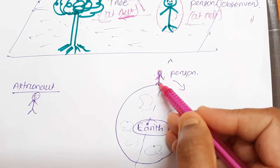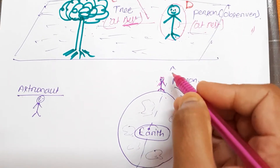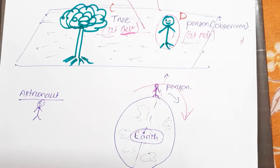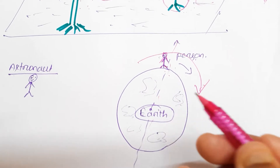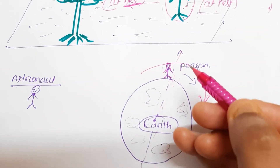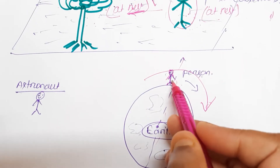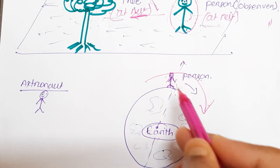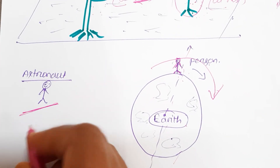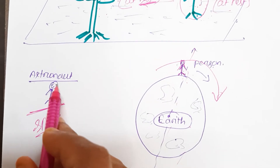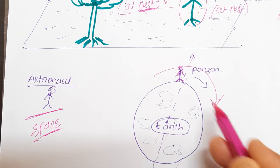A person staying on the Earth cannot feel the motion of the Earth. This is the rotational motion. We know day and night occur due to this rotational motion — we can experience day and night, but we cannot directly observe the motion of the Earth. However, this rotational motion of the Earth can be seen by astronauts in space.